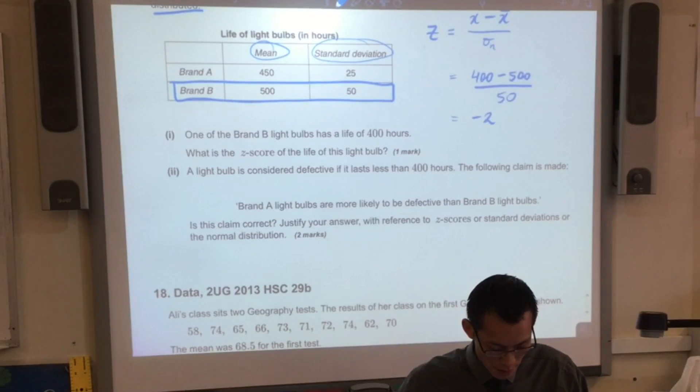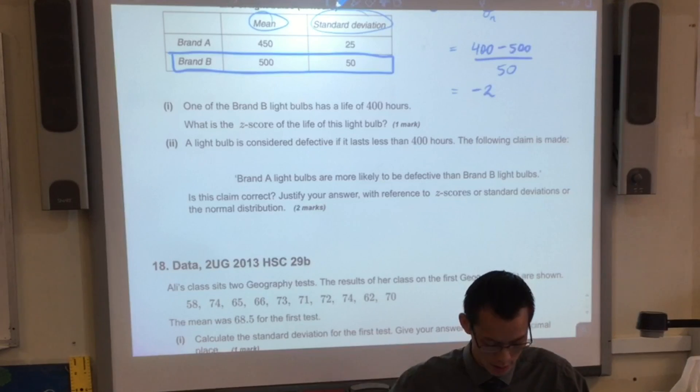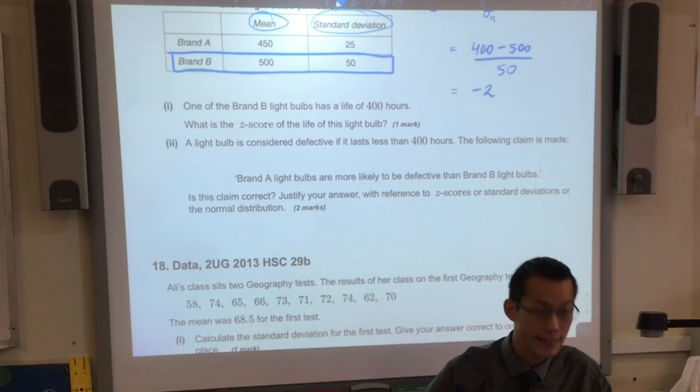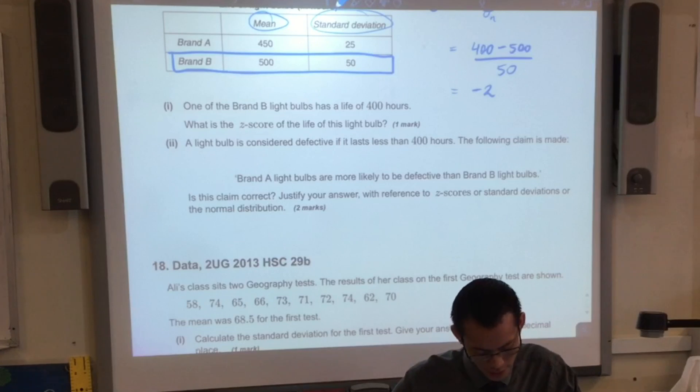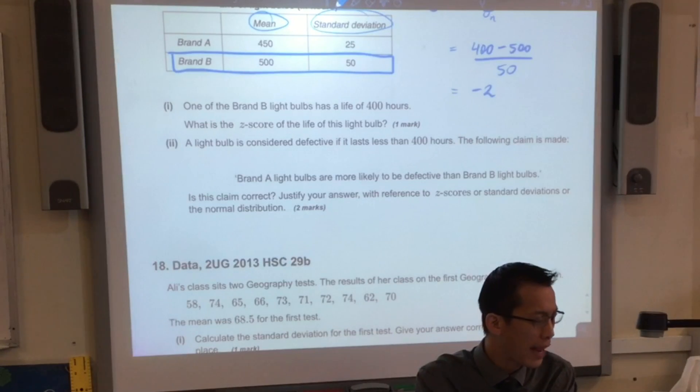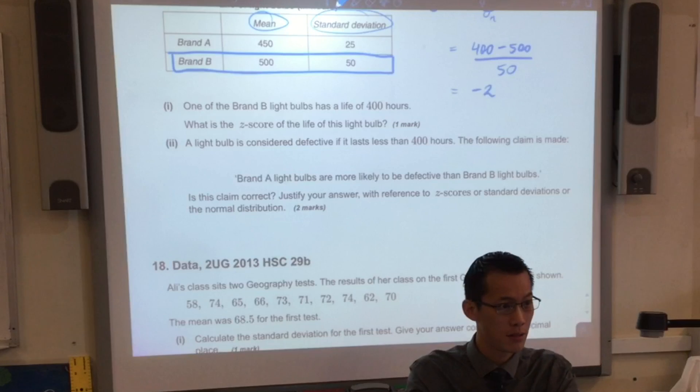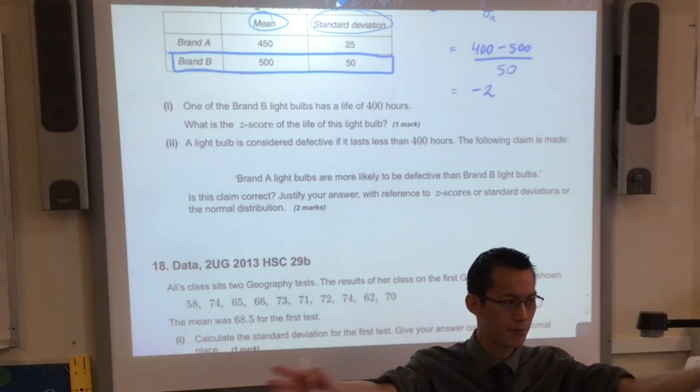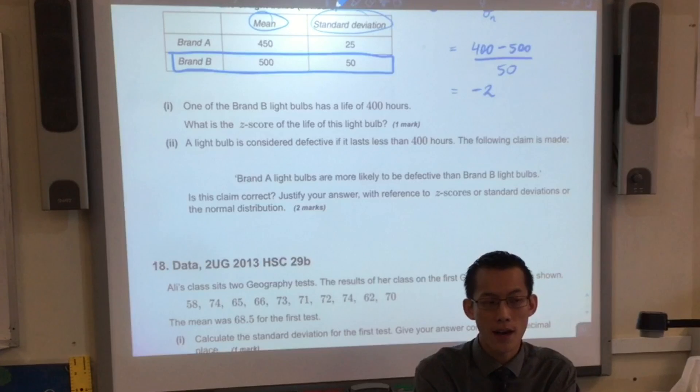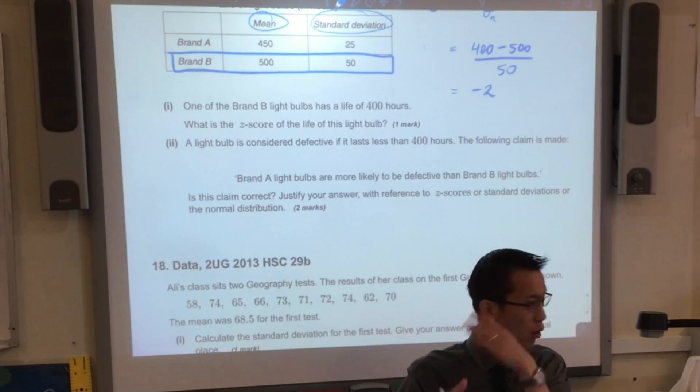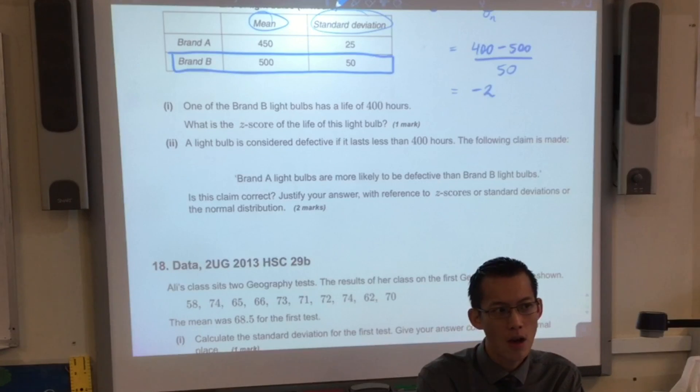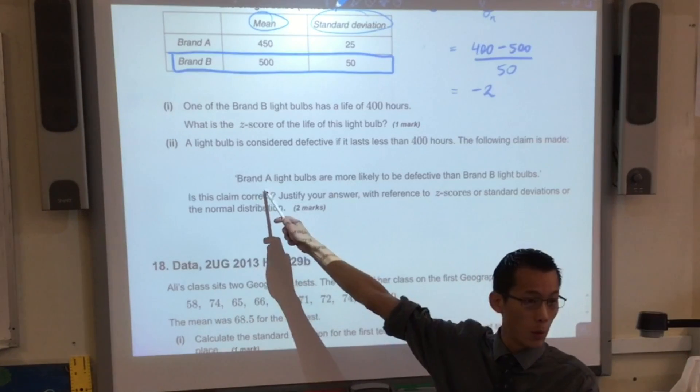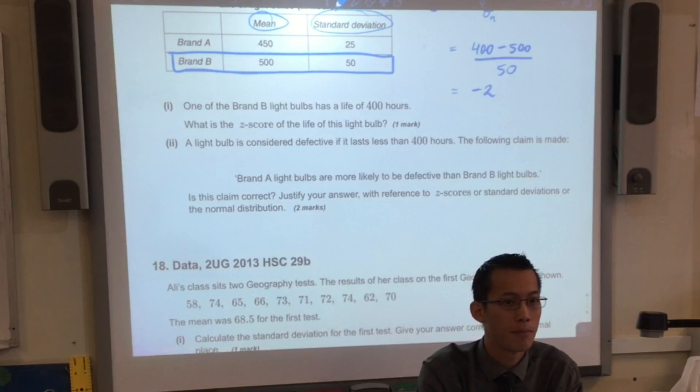Now, part two, and this often is the case, part two is going to directly follow on to part one. So keep what we just worked out in your mind, and let's read. A light bulb is considered defective if it lasts less than 400 hours, and the following claim is made: Brand A light bulbs are more likely to be defective than brand B light bulbs. Pause for a second. We had a look last week at a pair of golfers. Do you remember that? And one of the questions was asked to argue why this golfer is better than that golfer, or vice versa. Now, I want you to have a look at the data. Why do you think anyone would make a claim like that on the basis of that data up there?